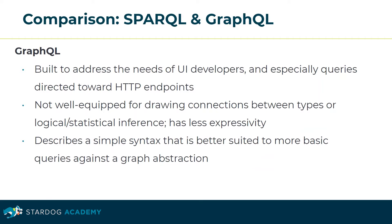GraphQL is built to address the needs of UI developers, and especially queries directed toward HTTP endpoints. It's not well-equipped for drawing connections between types or logical or statistical inference, and it has less expressivity. It describes a simple syntax that is better suited to more basic queries against a graph abstraction.